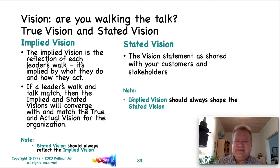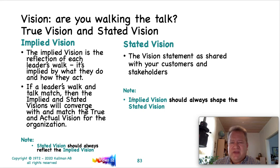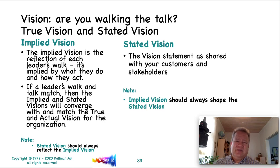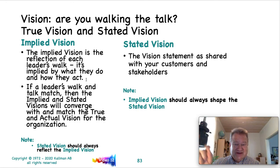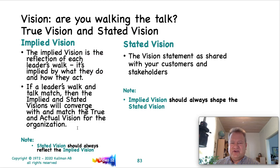So let's break these down a little bit to help you understand what we're talking about. Right up front, the implied vision should help shape the stated vision. The implied vision is the reflection of each leader's walk — it's implied by what they do and how they act, not just what they say. Remember the values poster where it was nothing but check marks? If the leader's walk and talk match, then implied and stated visions will converge with and match the true and actual vision for the organization.